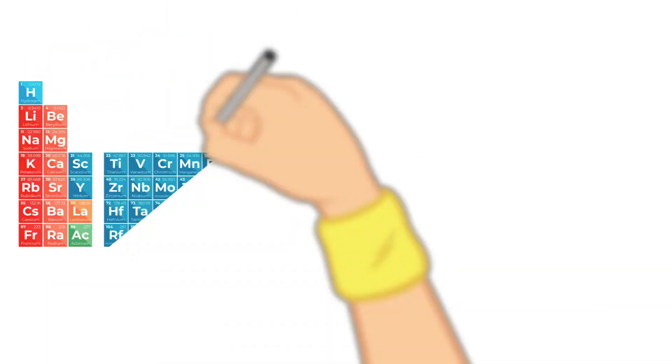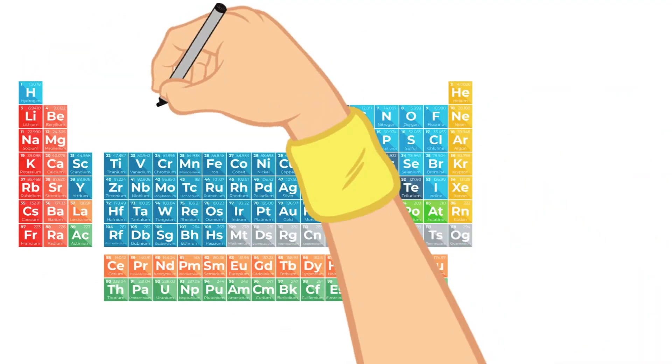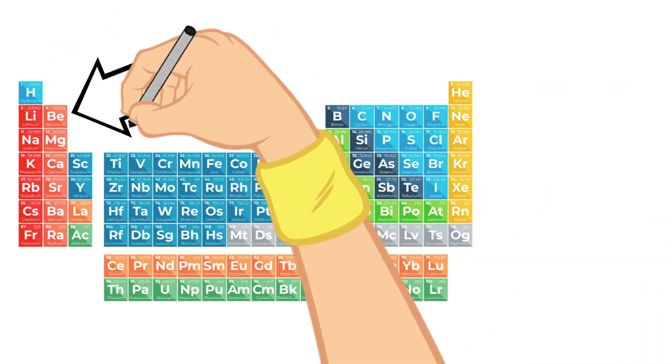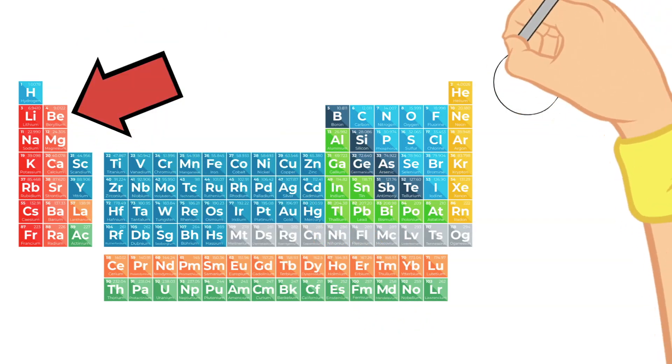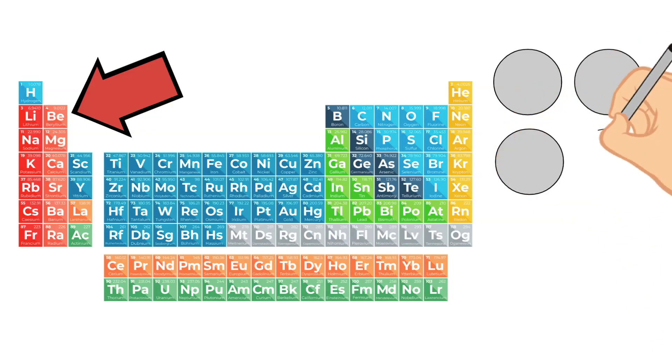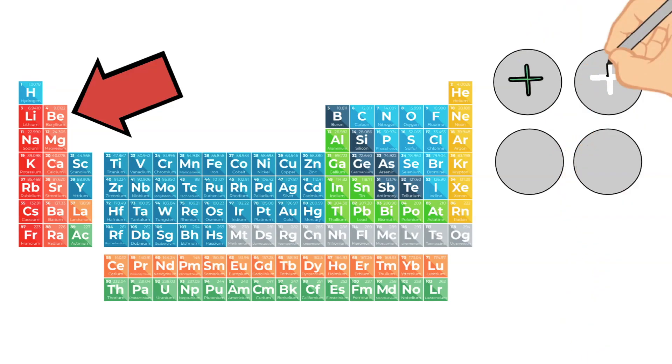Last but not least today we are going to talk about beryllium. Beryllium has an atomic number of four which means what? That's right that it has four protons in its nucleus. Its atomic mass is a little over nine.